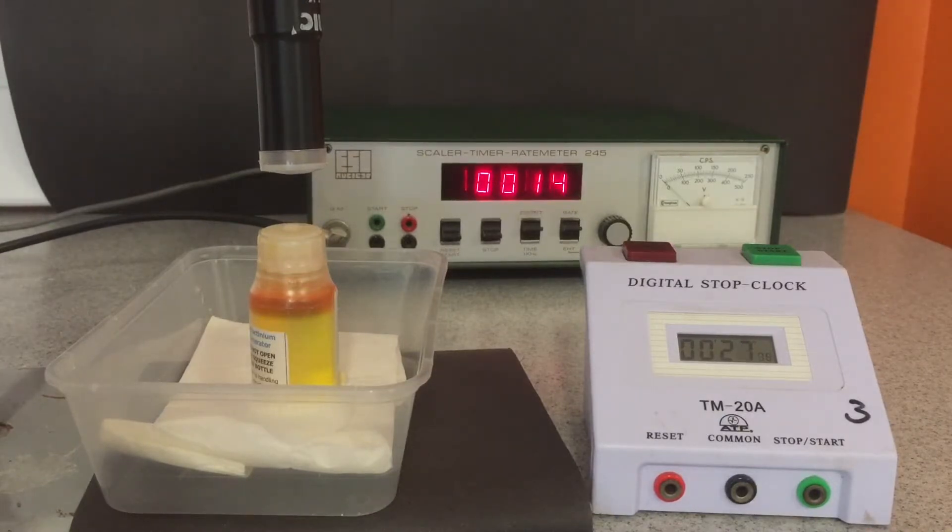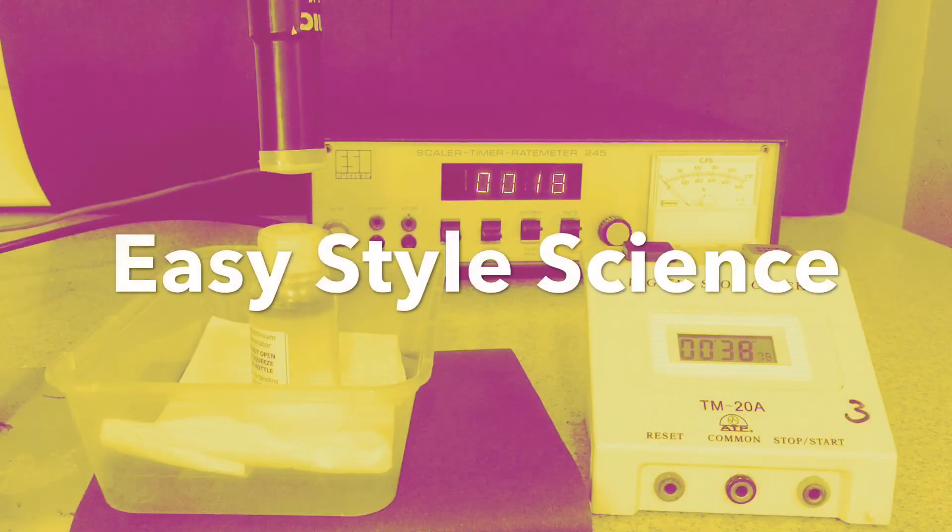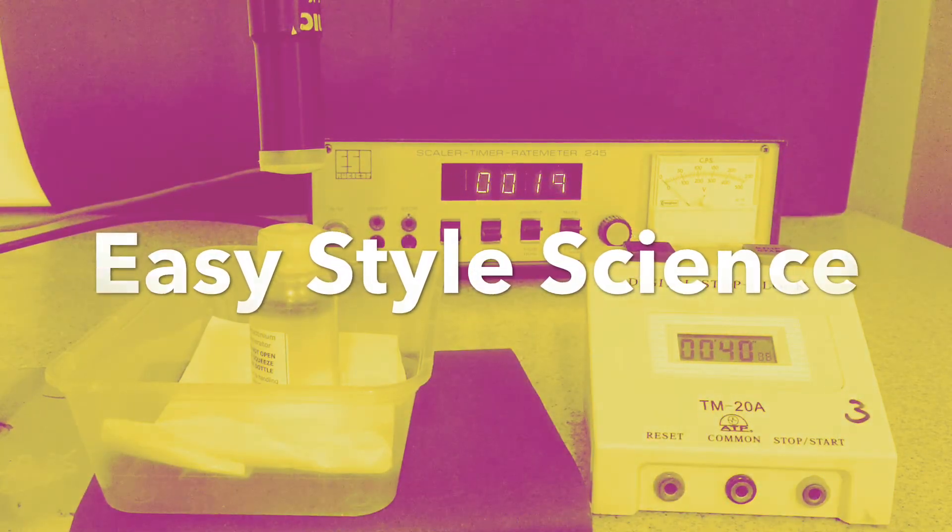Readings are taken every 20 seconds and the results are recorded in a graph. This will then be used to calculate the half-life of the protactinium.